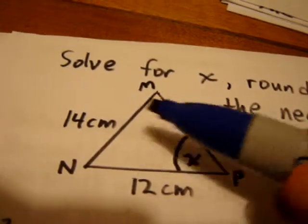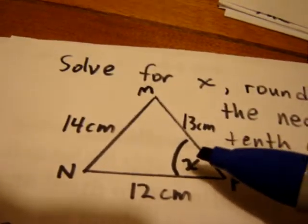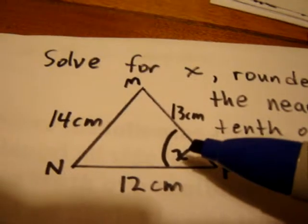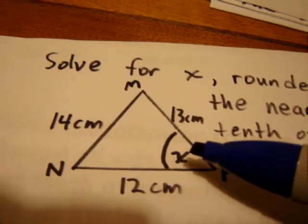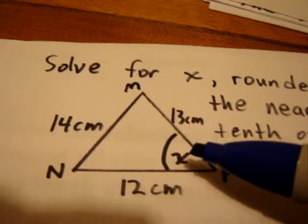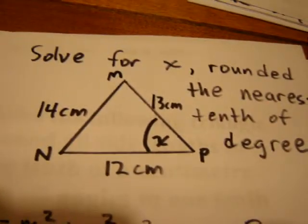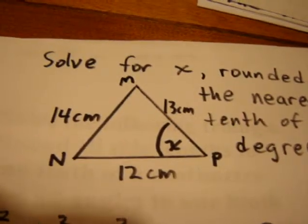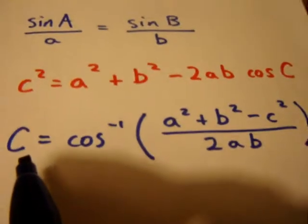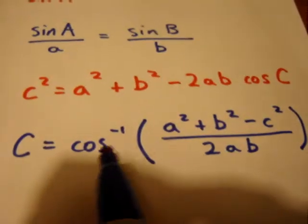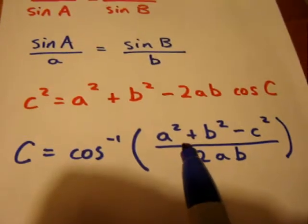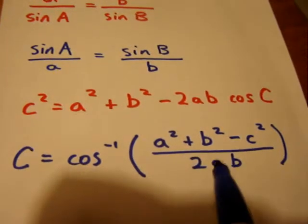Well, when we know all three sides and we don't know any angles, we clearly cannot set up the sine law. So, we must use the cosine law. Well, there's another version of the cosine law which we can use when we're looking for an angle, and it's right here. Capital C is cos inverse of quantity A squared plus B squared minus C squared all over 2AB.